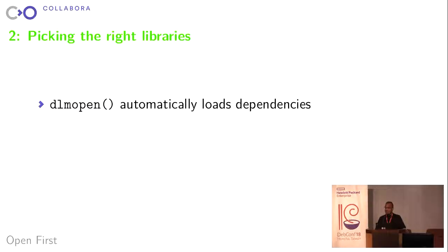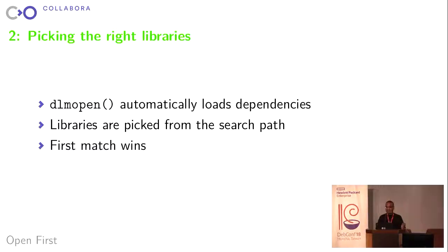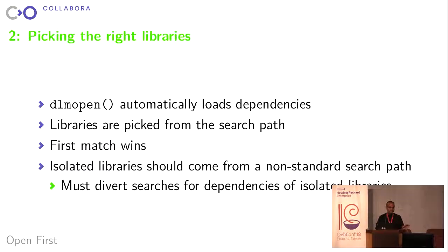DLMopen, just like DLopen, automatically loads dependencies. Libraries are picked from the search path, which is slightly not what we want, because we want to pick libraries from the host in order to parachute them into the runtime. And the first match wins. So it provides the isolated namespace, but we still need to do some work to work around it.